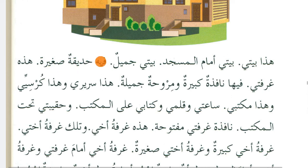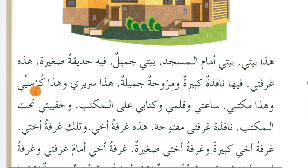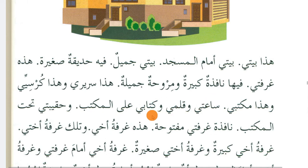'Bayti jameel' - my house is beautiful. 'Feehi hadikatun sagheera' - in it there is a small garden. 'Hazihi urfati' - this is my room. 'Feeha nafizatun kabiratun wa mirwahatun jameela' - in it there is a big window and a beautiful fan. 'Haza sariri' - this is my bed. 'Wa haza kursi' - and this is my chair. 'Wa haza maktabi' - and this is my table. 'Sa'ati' - my watch, 'wa kalami' - and my pen, 'wa kitabi' - and my book.